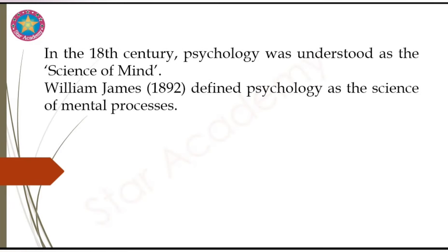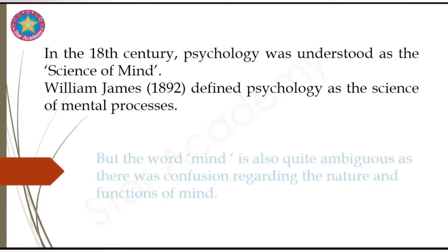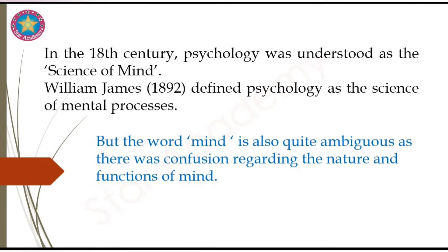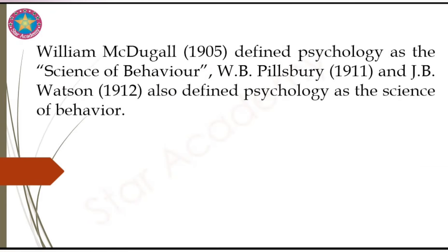William James in 1892 defined psychology as the science of mental processes. So in the 18th century, psychology was understood as the science of mind. But the word mind is also quite ambiguous, as there was confusion regarding the nature and function of mind. In 1905, William McDougall defined psychology as the science of behavior. W.B. Pillsbury and J.B. Watson also defined psychology as the science of behavior.